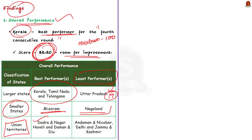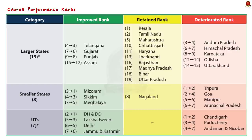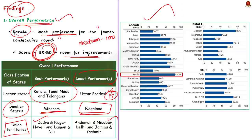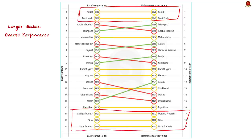Among the smaller states, Nagaland is at the bottom. Among union territories, Andaman and Nicobar is at the bottom along with Delhi and Jammu and Kashmir. From the findings, it can be concluded that in overall performance among larger states, Kerala and Tamil Nadu have retained their positions as the top two performers in both 2018-19 and 2019-20. Similarly, Madhya Pradesh, Bihar and Uttar Pradesh have retained their positions as the least three performers in both 2018-19 and 2019-20.